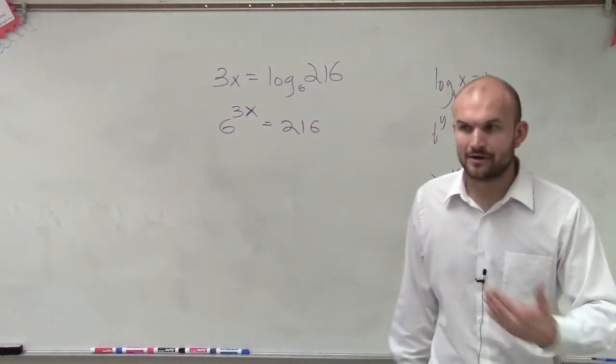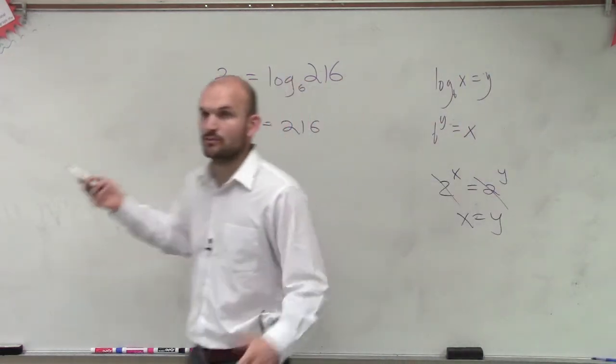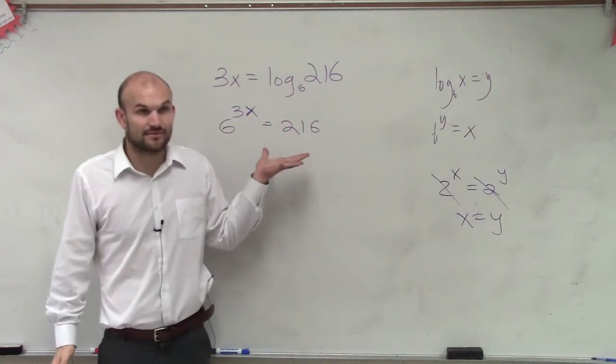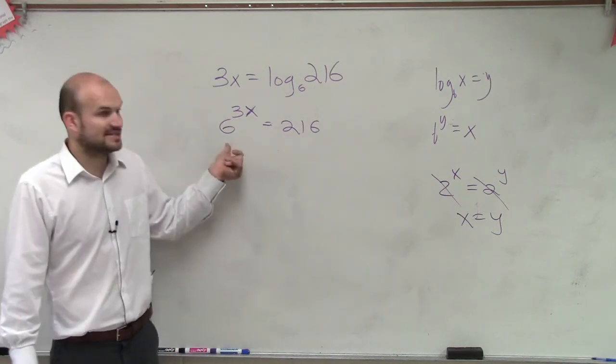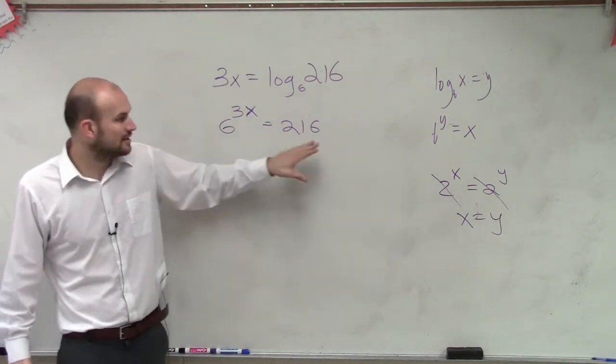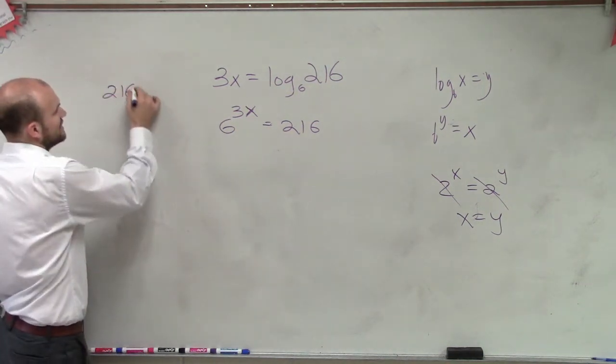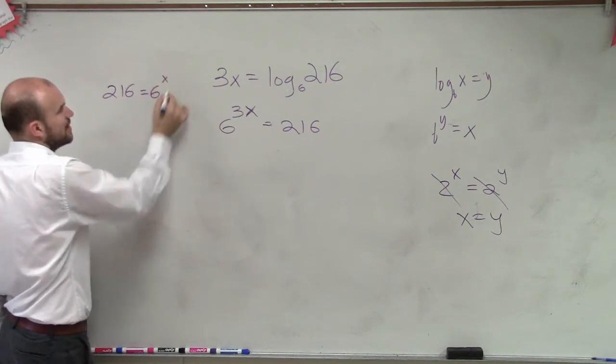Now, how did we learn how to solve equations when we have exponents? We need to make sure they have the same base, right? So this is a base 6. This does not have a base 6. However, can we rewrite this as a base 6? Can you rewrite 216 as 6 to some number?